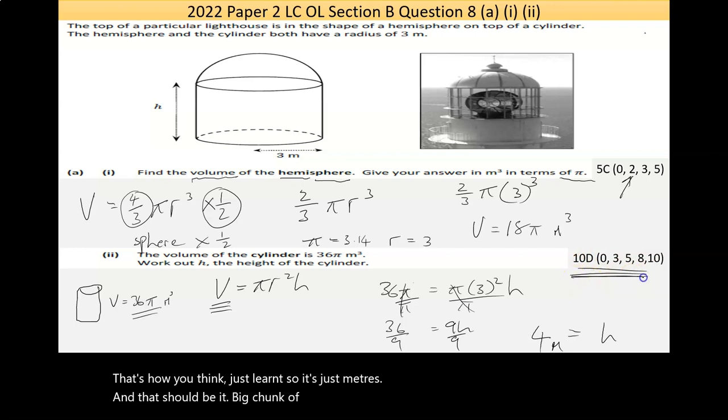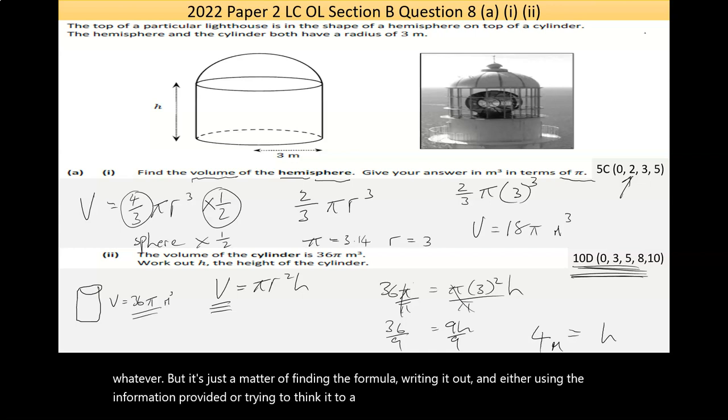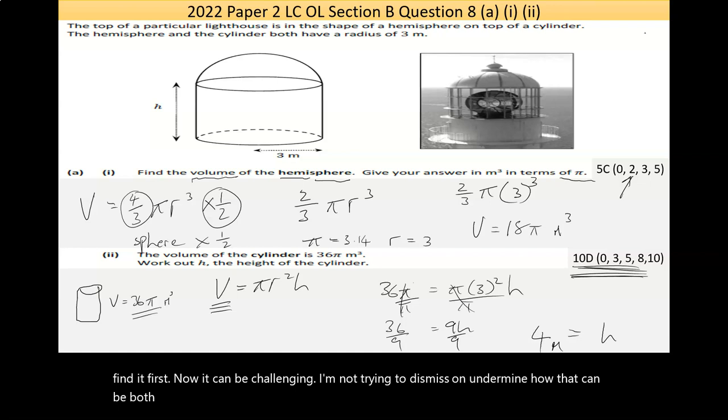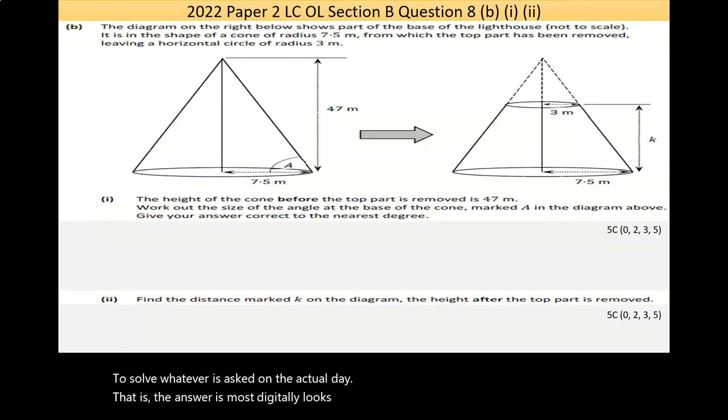Big chunk of marks here, if you have practiced the different questions in paper 2 to do with area volume, you'll see that they're consistent. There's different situations every time, sphere versus this versus a cone, whatever. But it's just a matter of finding the formula, writing it out, and either using the information provided or trying to think to a slightly deeper level to figure out what information they haven't given you directly, and you have to find it first. Now, it can be challenging, I'm not trying to dismiss or undermine how hard that can be, but the problem-solving strategies you develop through practice will help you to solve whatever is asked on the actual day. Now, this is the answer to now, digitally, looks good.